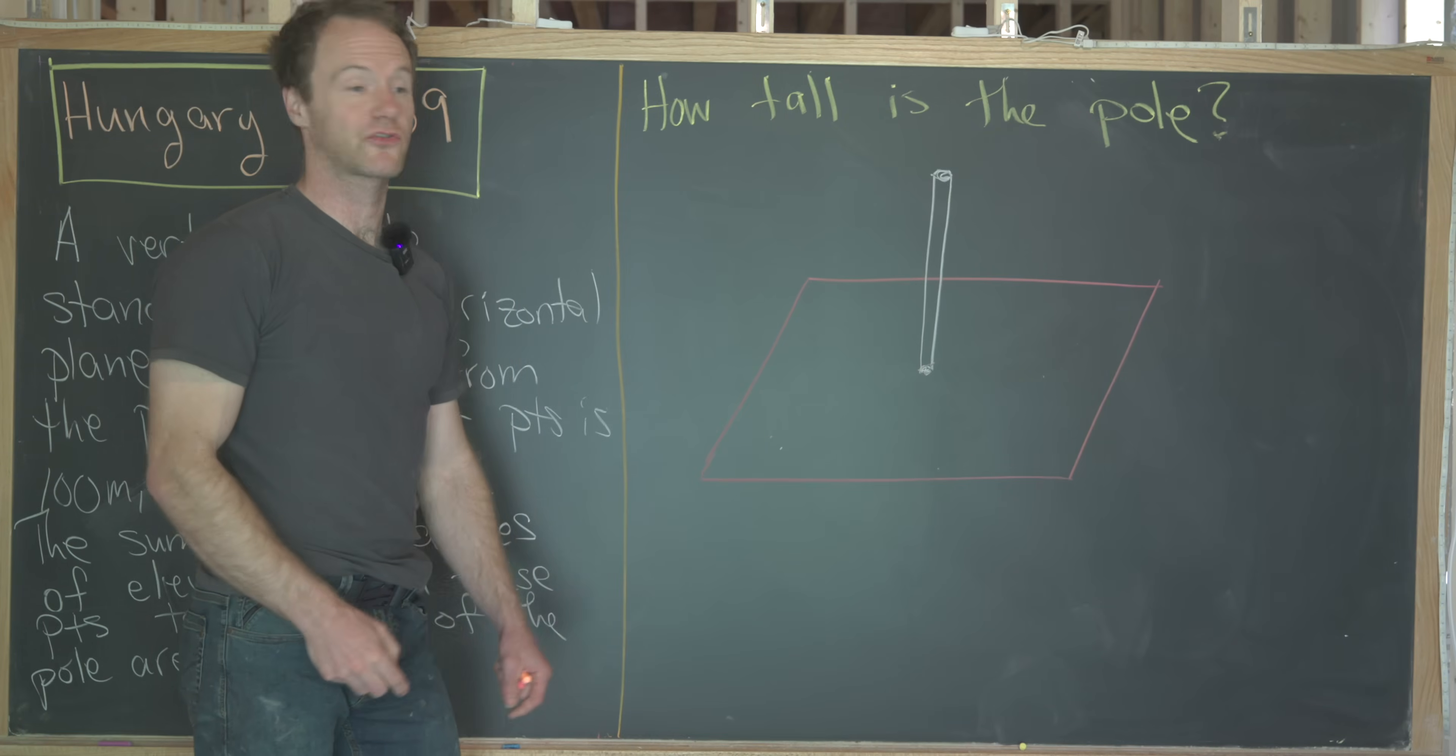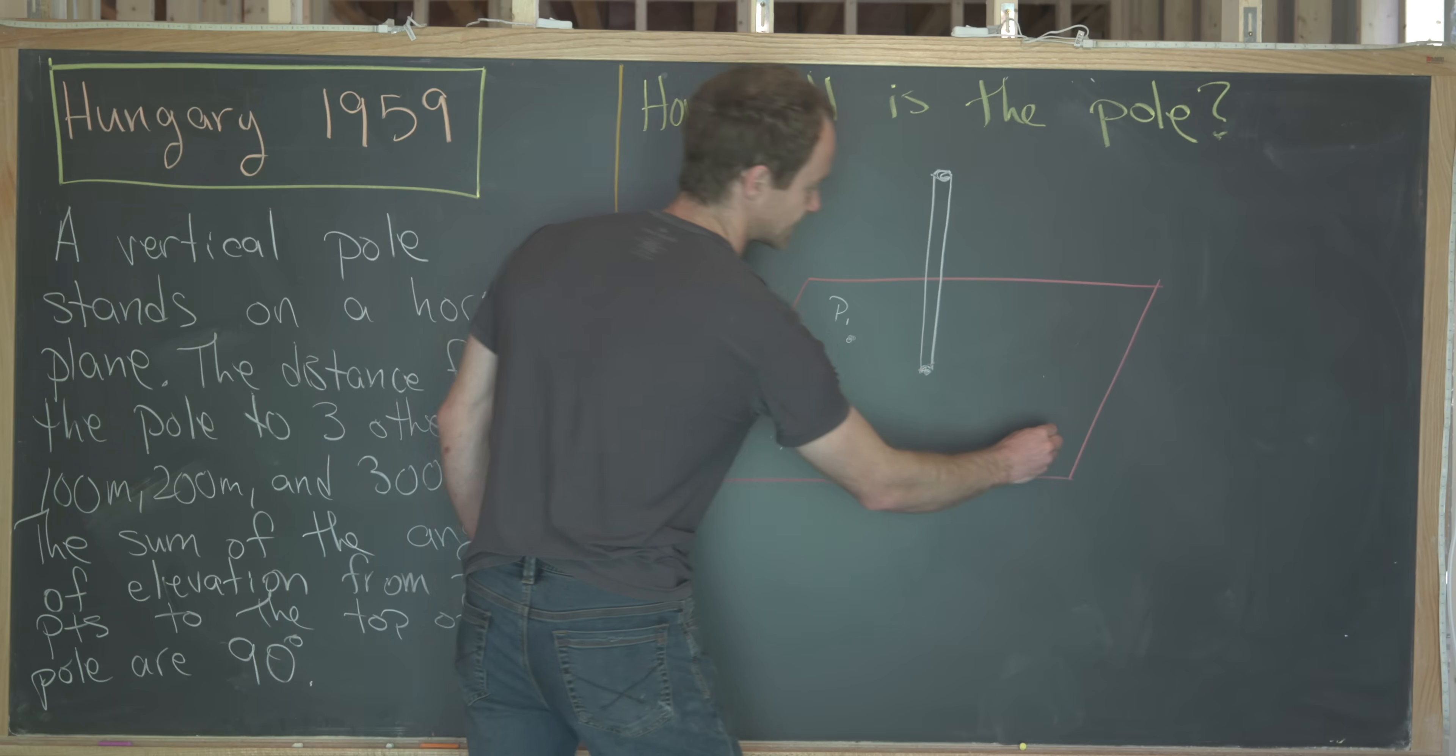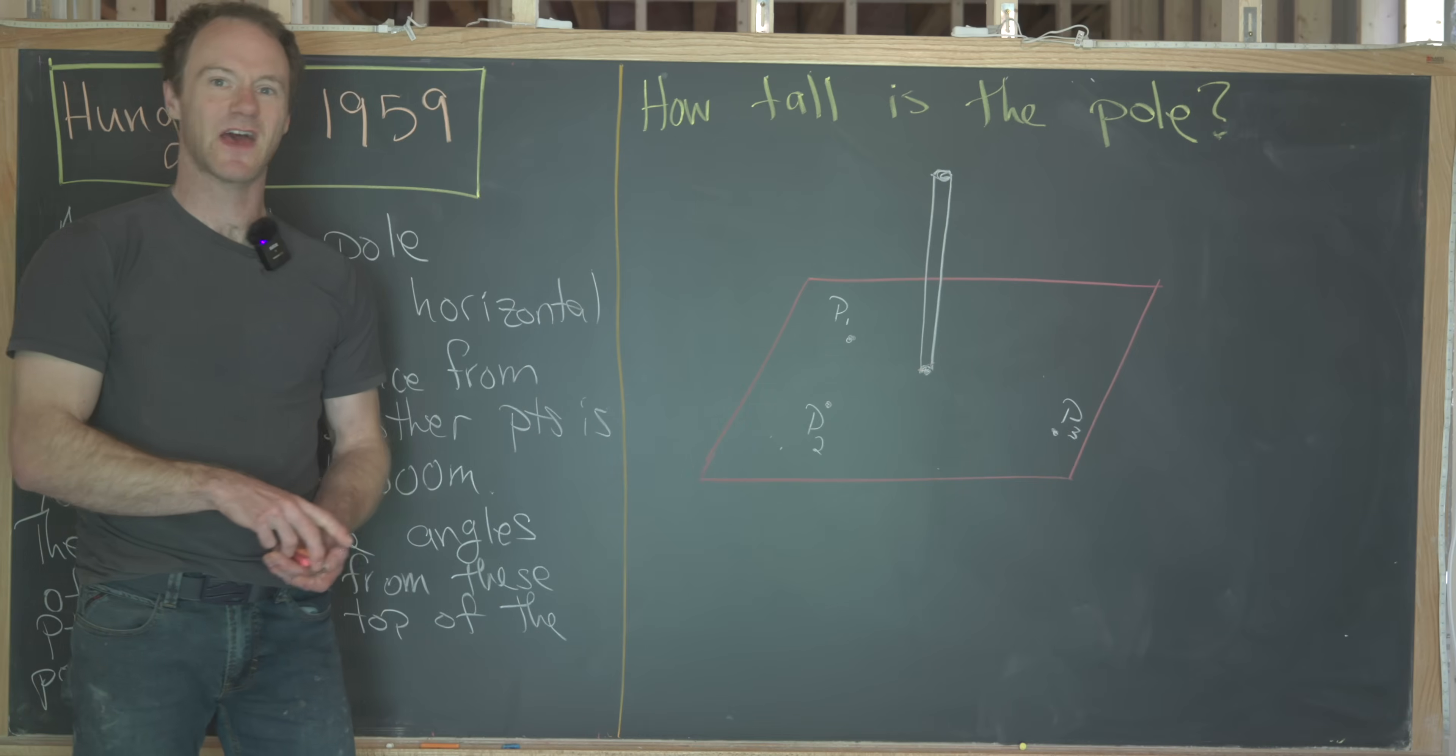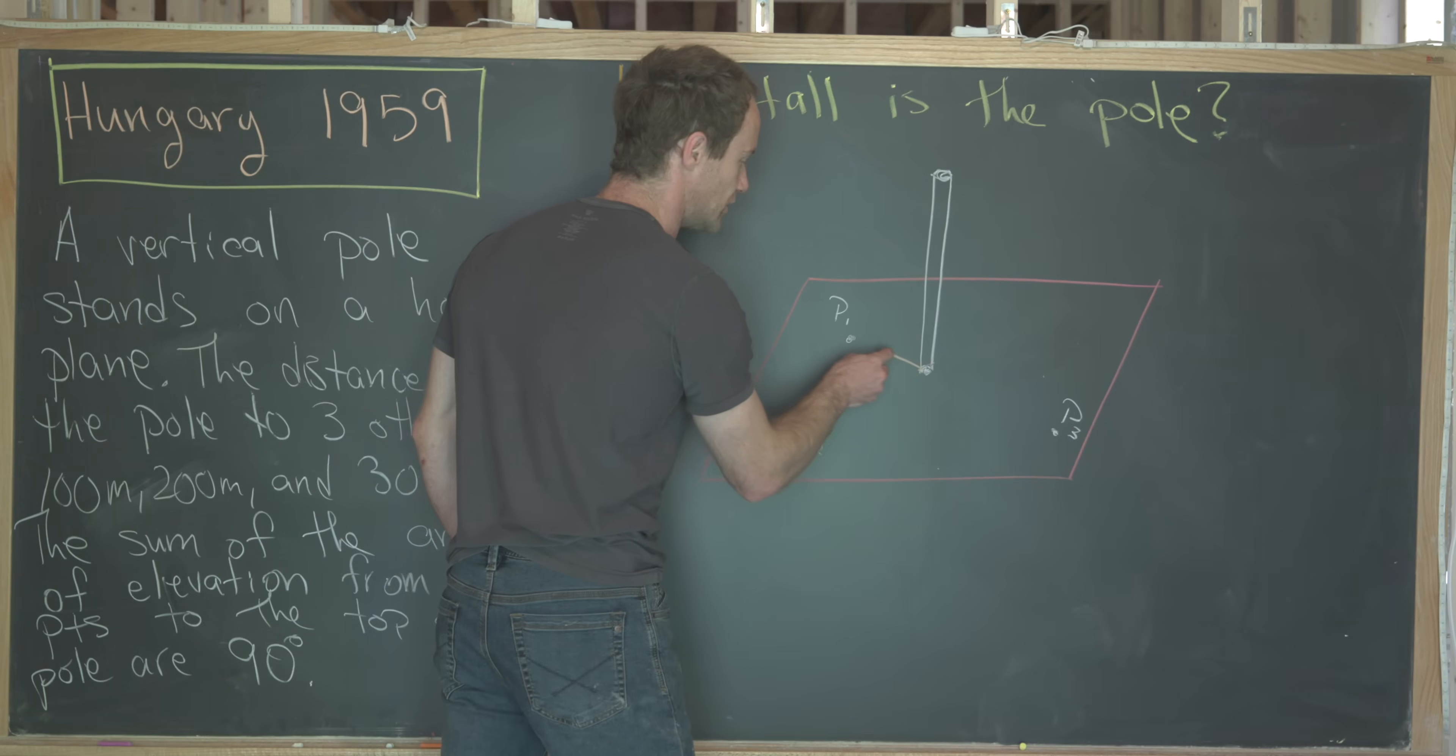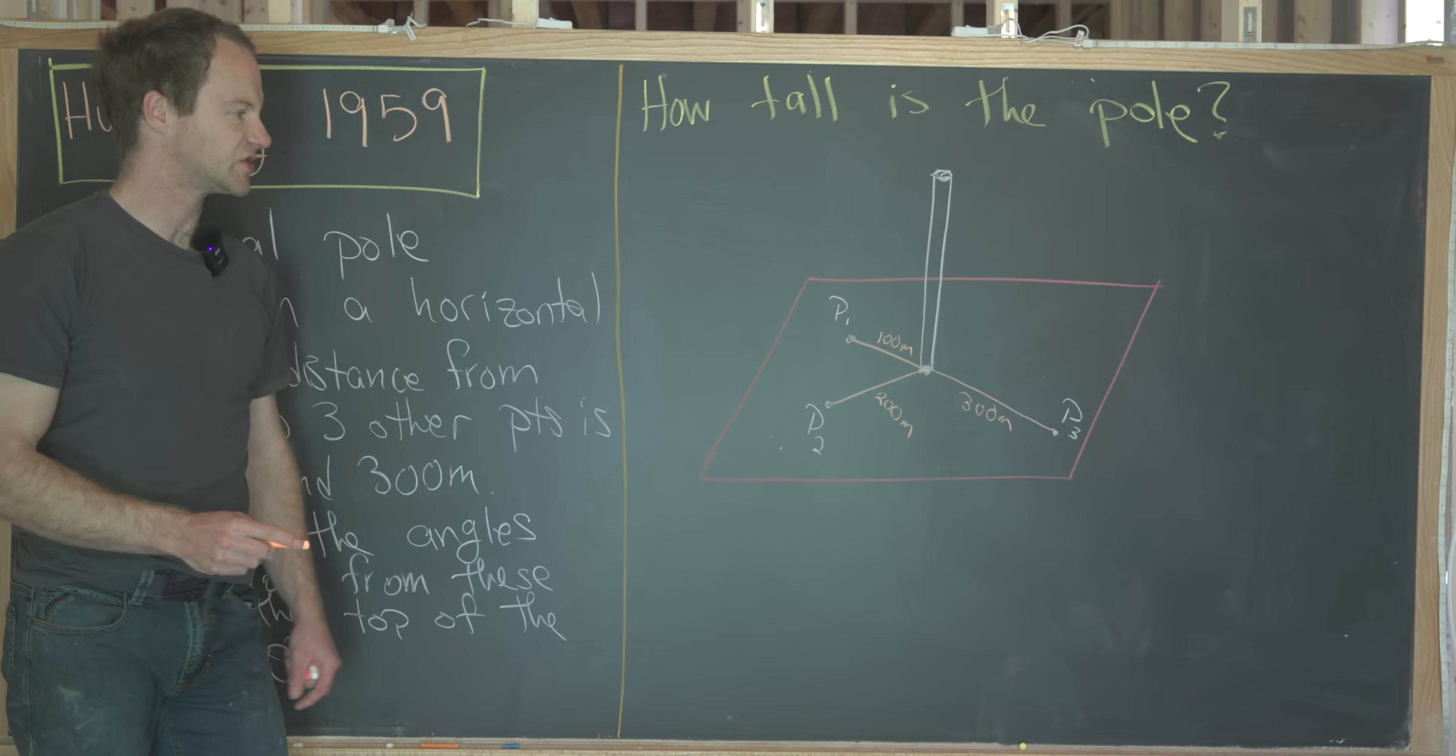And then we'll put our three points into the plane. So let's say that P1 is right about here, P2 is here, and then P3 is way over here. Notice I've had this set up so that P1 is the closest to the base of the pole, so that's 100 meters. P2 is next, that's 200 meters, and then P3 is the furthest, that's 300 meters. Obviously this is just a mock-up of the situation.